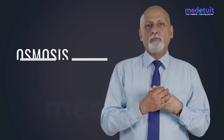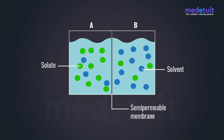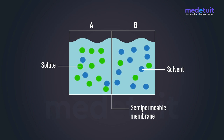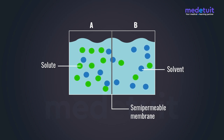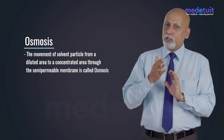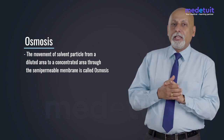Now we move on to the third type of passive transport called osmosis. To understand the mechanism of osmosis, let us view this animation. Imagine there is a container with a partition made up of a semi-permeable membrane. Compartment A is concentrated, having more solutes, while compartment B is diluted, having less solutes. The solvent particles move from the diluted area into the concentrated area through the semi-permeable membrane. This movement of solvent from a diluted area to a concentrated area through the semi-permeable membrane is called osmosis.